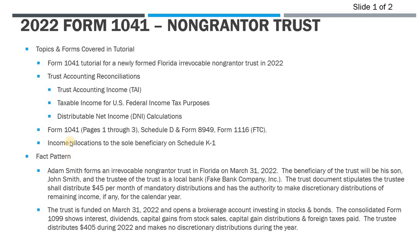For this Form 1041 tutorial, I want to go through an example for 2022. This is going to be an irrevocable non-grantor trust — a complex trust for federal income tax purposes — and I want to cover a very simple example where a trust has income, some expenses, and is required to make distributions during the year.